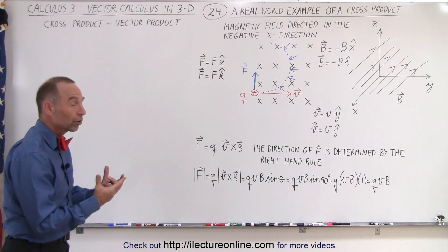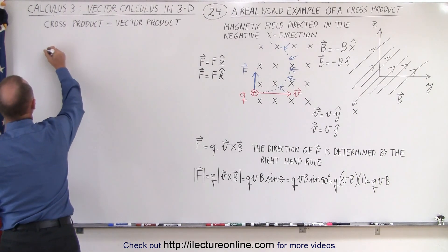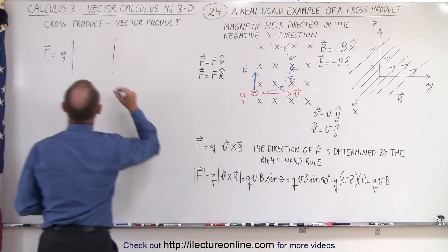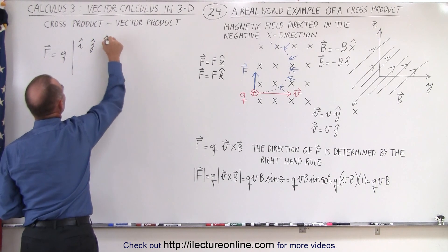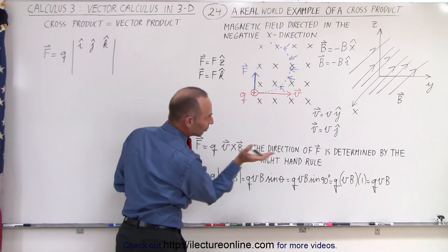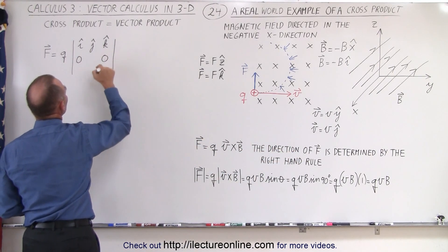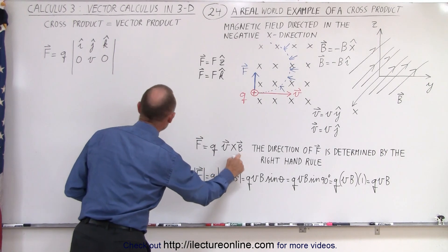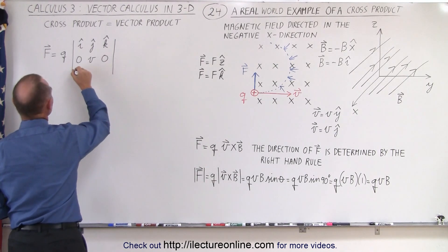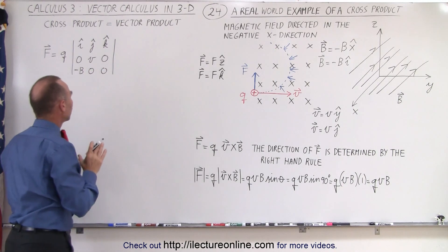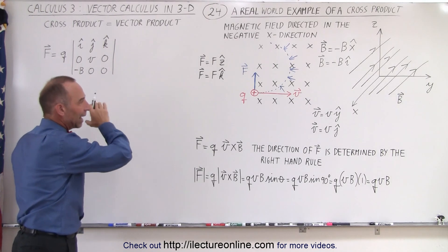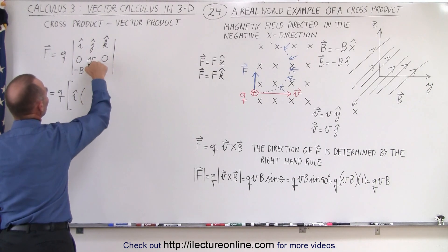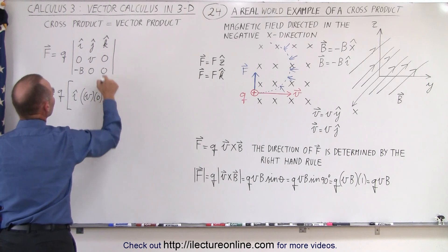Now let's see how that works out when we actually do the cross product. We can say that the force equals the charge Q multiplied times V cross B. To compute V cross B, we set up the determinant with I, J, K. The components of the velocity: since velocity only has a component in the y-direction, the x and z components are zero, and the y component equals V. For the magnetic field B, it's directed in the negative x-direction, so that's negative B, with no components in the y or z direction.